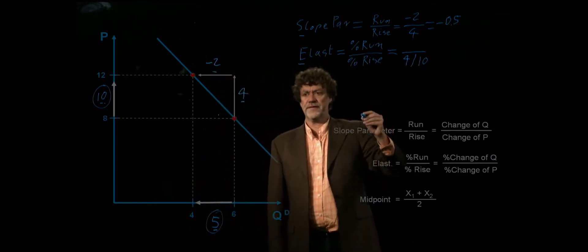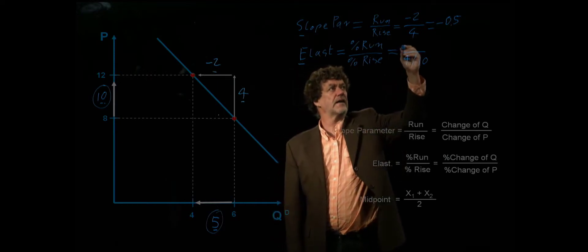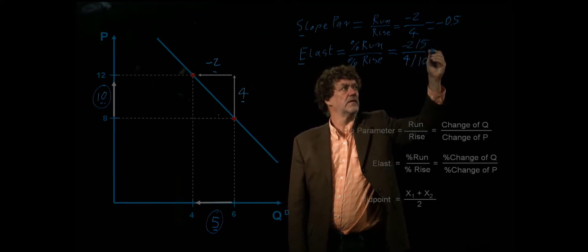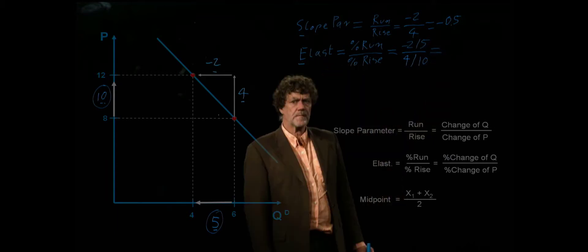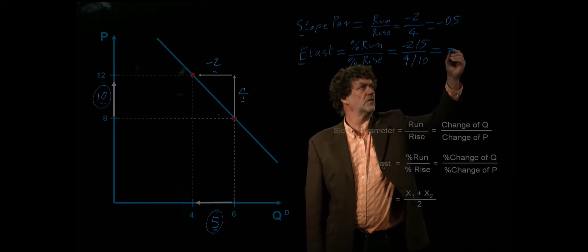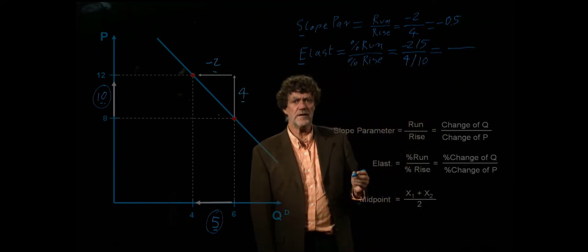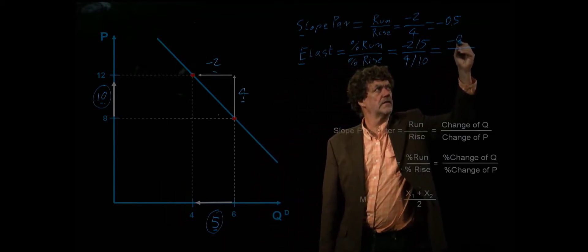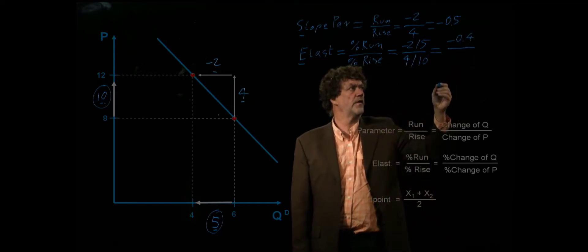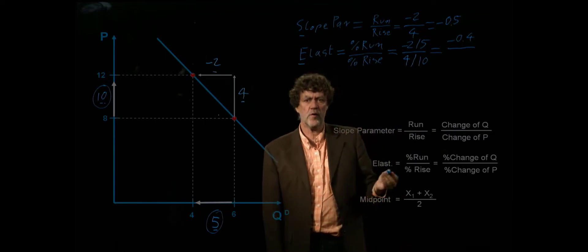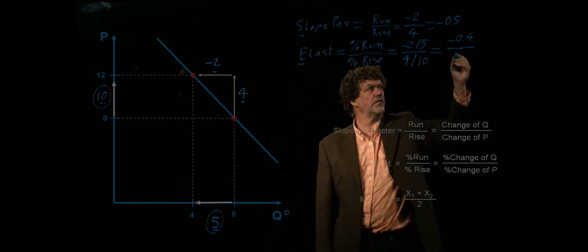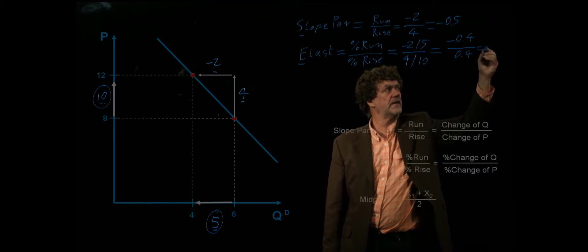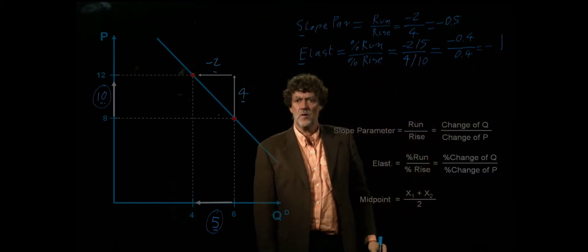So for the percentage change of quantity we divide negative 2, which was the absolute change, by 5. And what we get is the percentage change of quantity is actually negative 2 divided by 5 which is negative 40%. We write it here as negative 0.4. And 4 divided by 10 by accident is also 0.4 or 40%. So we have an elasticity here of negative 1. What does it mean?